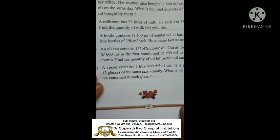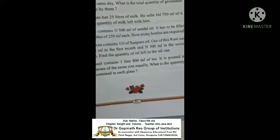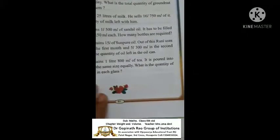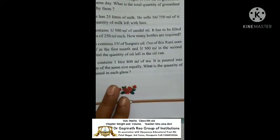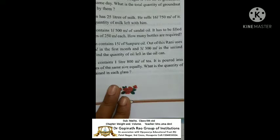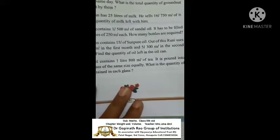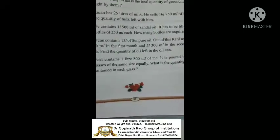An oil can contains 15 liters of sun pure oil. Out of this, Rani uses 3 liters 600 milliliters in the first month and 5 liters 300 milliliters in the second month. Find the quantity of oil left. Total oil is 15 liters. First month: 3 liters 600 milliliters. Second month: 5 liters 300 milliliters. These are sums I am doing already.